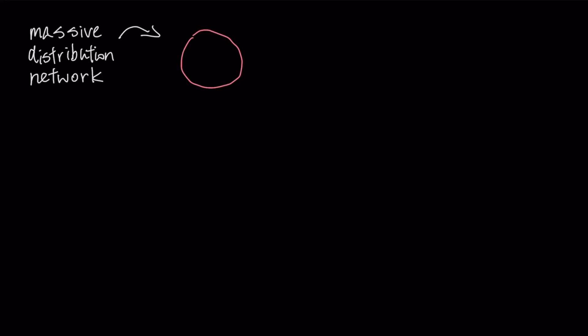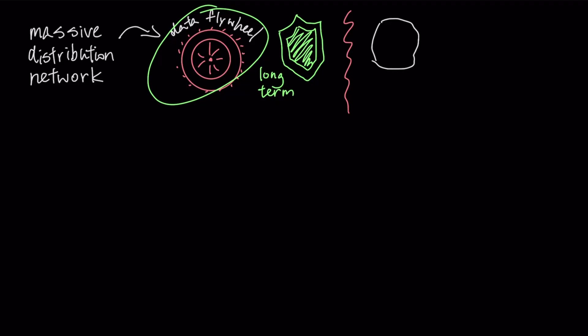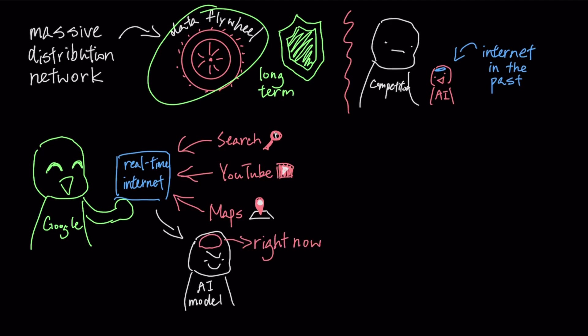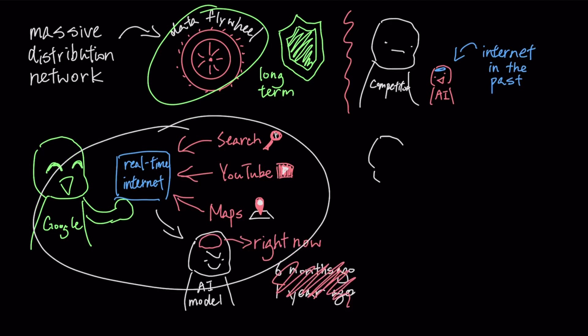This massive distribution network feeds directly into a data flywheel, which might be their most durable long-term defense. While most competitors are training their artificial intelligence on static datasets that represent the internet as it existed in the past, Google has a constant stream of real-time information flowing from search, YouTube, and maps. This allows their models to understand the world as it exists right now, rather than how it looked six months ago or a year ago. And that creates a gap in quality that is very difficult for any outside company to close.